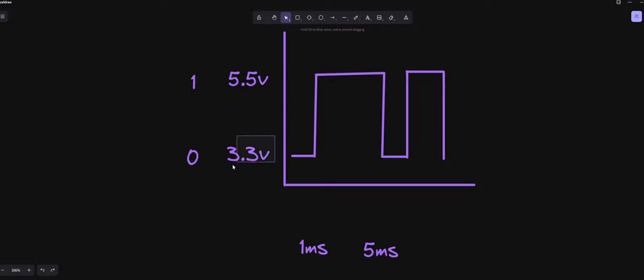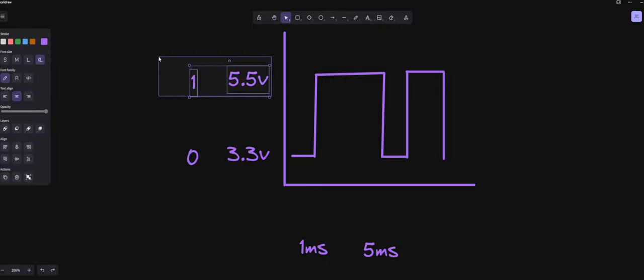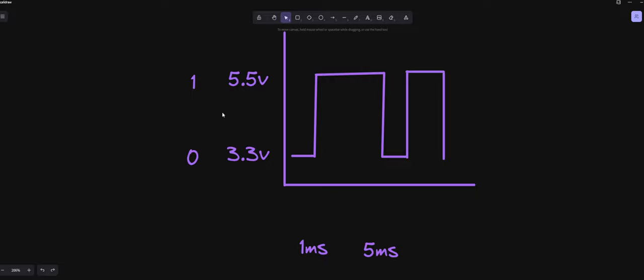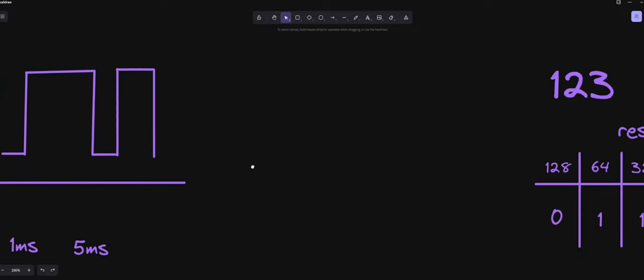And what we're going to say is whenever the wire is at 3.3 volts or lower, we're going to consider anything below 5.5 volts, we're going to consider it to be zero. And that's going to be considered to be our off stage or our false stage. Then, if the wire ever has a voltage at 5.5 or above, we're going to consider that to be on or true.